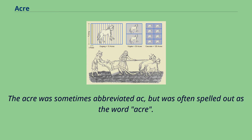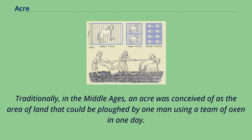The acre was sometimes abbreviated AC, but was often spelled out as the word acre. Traditionally, in the Middle Ages, an acre was conceived of as the area of land that could be plowed by one man using a team of oxen in one day.